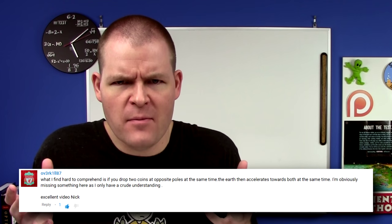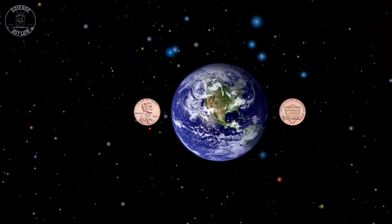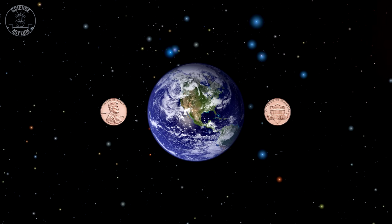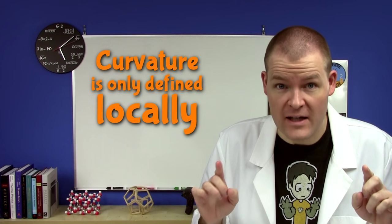If I drop two coins on opposite sides of the Earth, and they each think the Earth is accelerating toward them, then the Earth has to be accelerating toward both at the same time. First of all, each coin is in a different reference frame, so you can only be looking from the point of view of one at a time. The Earth doesn't accelerate toward both — it accelerates toward each. Here's the first coin's frame, the second coin's frame, and the Earth's frame. The distinction is very important because curvature is only defined locally.